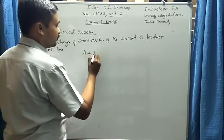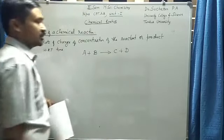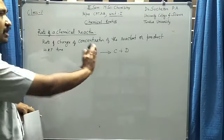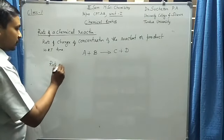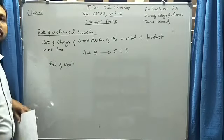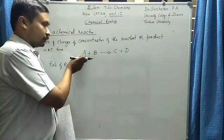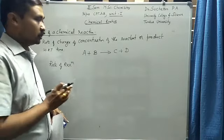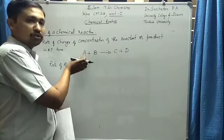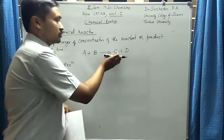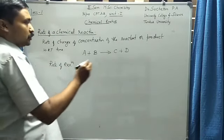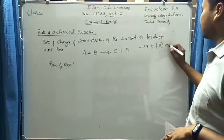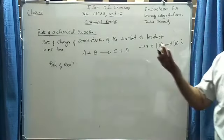If I take a simple reaction A + B giving C + D — simple because the stoichiometric coefficient of each reactant and product is equal to 1 — there are four options to define the rate: in terms of reactant A, reactant B, product C, or product D. With respect to time, the molecules of A react with B to produce C and D. So with time, the concentration of reactants A and B decreases because they are reacting to produce products.